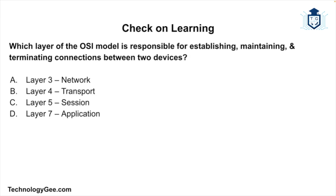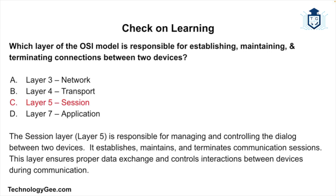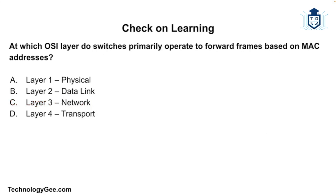Now for the check on learning. Question 1: Which layer of the OSI model is responsible for establishing, maintaining, and terminating connections between two devices — Layer 3, Layer 4, Layer 5, or Layer 7? The correct answer is Layer 5, the Session layer. The Session layer manages and controls the dialogue between two devices, establishes, maintains, and terminates communication sessions, and ensures proper data exchange and controls interactions between devices during communication.